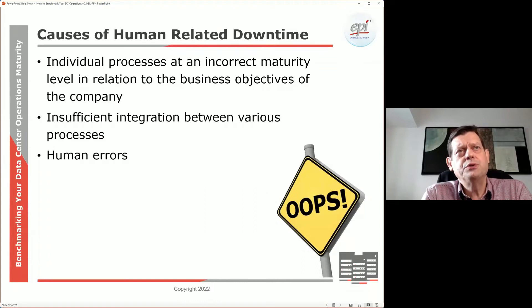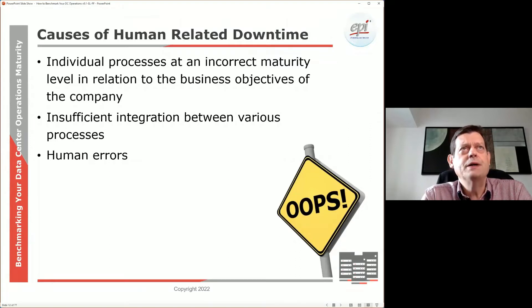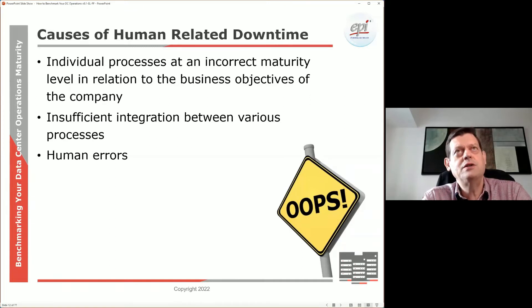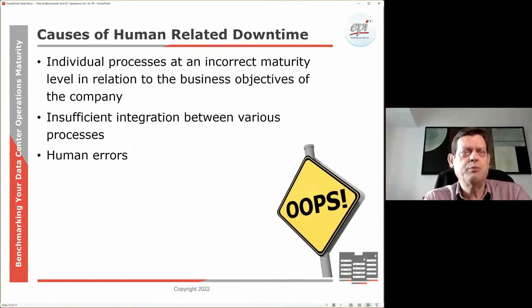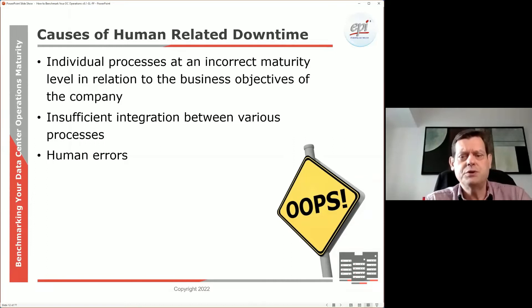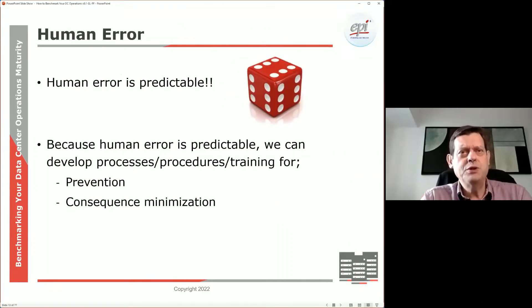What are some of the causes of those human errors? Well, it could be traditional operator mistakes — pushing the wrong button at the wrong time. It could be that the processes are not well described — over-engineered or under-engineered processes that don't have the right level of maturity based on the business or the capabilities of the team. Integration is always a big problem in many organizations. And of course, the good old oopsies that we do.